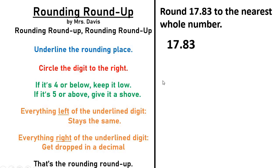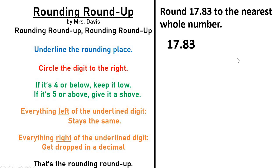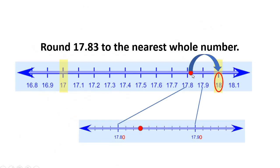Now that we've done it that way and got the answer — seventeen and eighty-three hundredths goes up to eighteen — let me show you how we'd solve that same problem using the steps of our Rounding Roundup song. Same problem: seventeen and eighty-three hundredths rounded to the nearest whole number. The first step is to underline the rounding place. Now it's the whole number, so we're going to underline the ones place. Circle the digit to the right — the digit to the right is the eight. Now that circled digit is what we're going to use to decide whether the underline digit stays at seven, so it stays at seventeen, or whether it's closer to eighteen and will round up to eighteen.